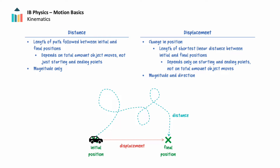Displacement, on the other hand, is the change in position between an object's initial and final positions. Its size or magnitude is the length of the shortest linear distance between an object's initial and final positions, and its direction is from the initial position to the final position. The displacement depends only on the starting and ending points, not on the total amount an object moves.